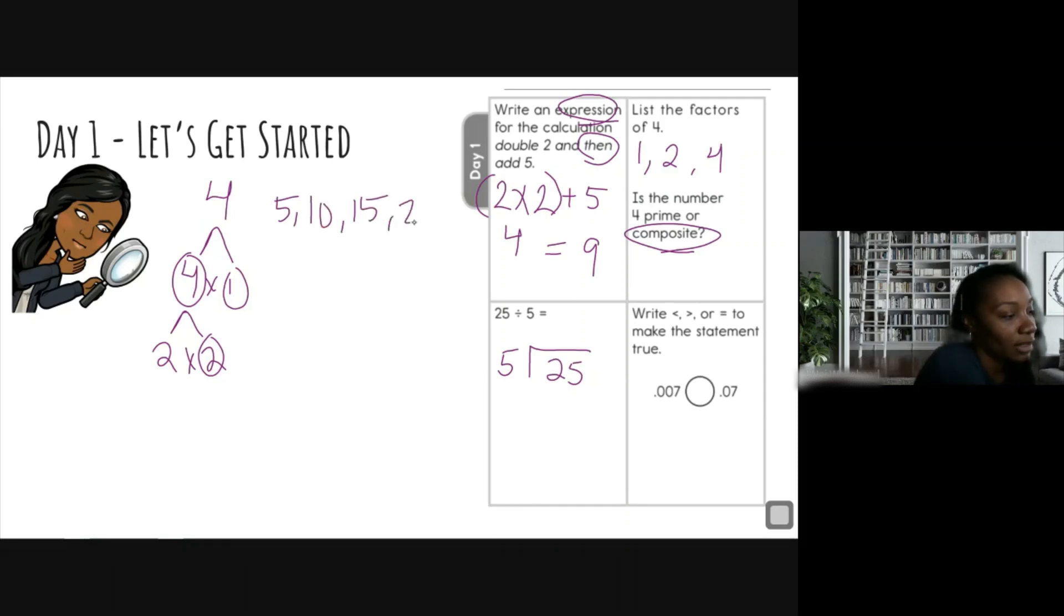I'm going to stop right there, so we can just count how many times five goes into 25. So we have one, two, three, four, and five. So my quotient or answer is five.